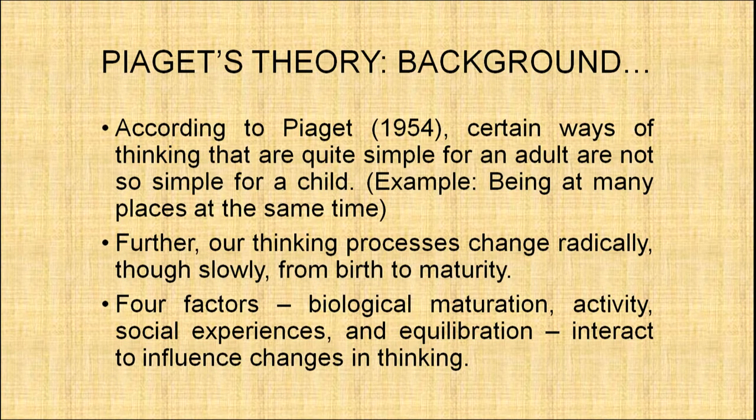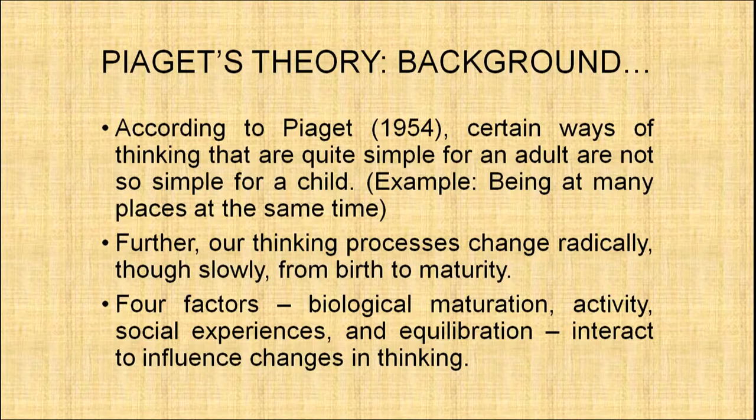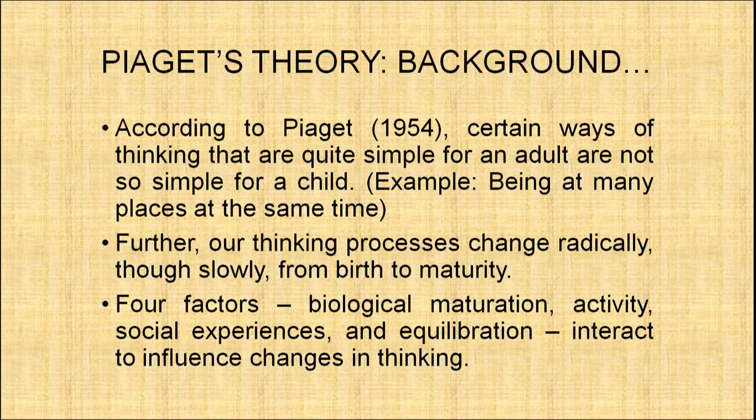According to Piaget, certain ways of thinking that are quite simple for an adult are not so simple for a child. For example, if you ask an adult whether they can be in Delhi, Mumbai, and Patna at the same time, they will say no. But a child may say yes. Piaget also proposed that our thinking processes change radically, though slowly, from birth to maturity. He identified four factors that interact to influence changes in thinking: biological maturation, activity, social experiences, and equilibration.